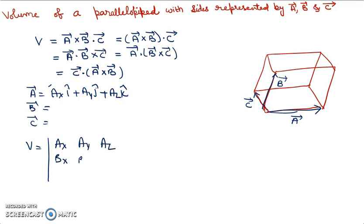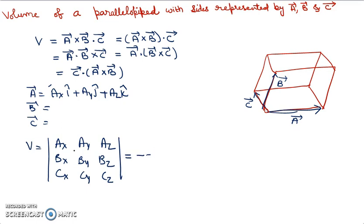then bx, by, bz, and then cx, cy, cz. The determinant that comes from this 3×3 matrix will represent the volume of the parallelepiped.